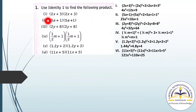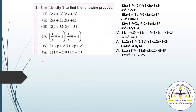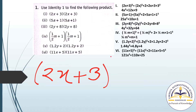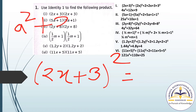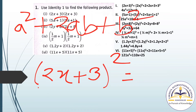In question number 1, use Identity 1 to find the following product: (2X + 3) and (2X + 3). Here both the numbers are the same, so we can clearly write (2X + 3) whole square. We know (A + B) whole square equals A square plus 2AB plus B square. Here A is 2X and B is 3.